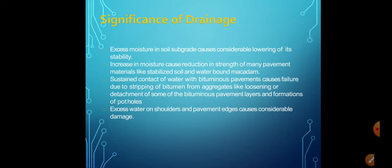Highway drainage is important for the following reasons: excess moisture in the soil subgrade causes considerable lowering of its stability. The thickness of the pavement structure is designed considering the lowest stability or strength value of the subgrade soil corresponding to the highest possible moisture content. If the stability of the subgrade soil falls below the design value, the pavement is likely to fail due to subgrade failure.